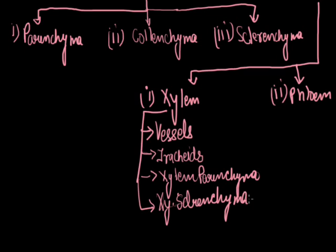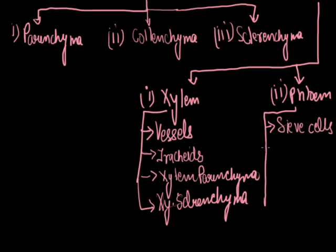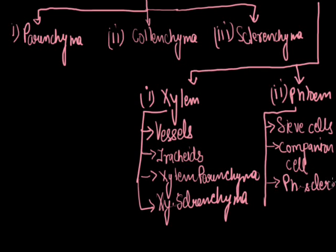In xylem, only the parenchyma is the living part while most tissues are dead. Phloem is generally composed of living parts; only the sclerenchyma is the dead part. Phloem consists of sieve cells, companion cells, phloem sclerenchyma, and phloem parenchyma.